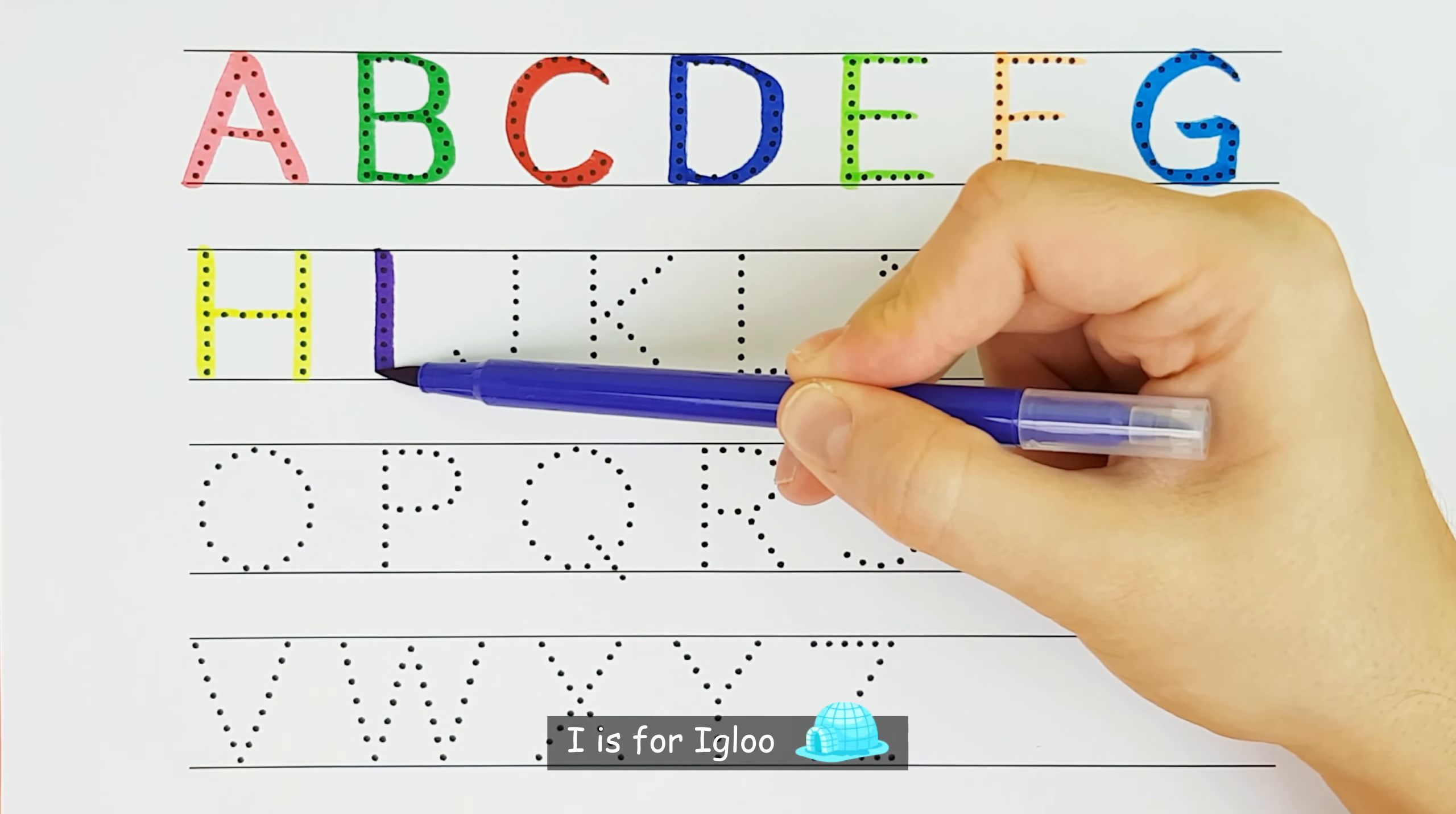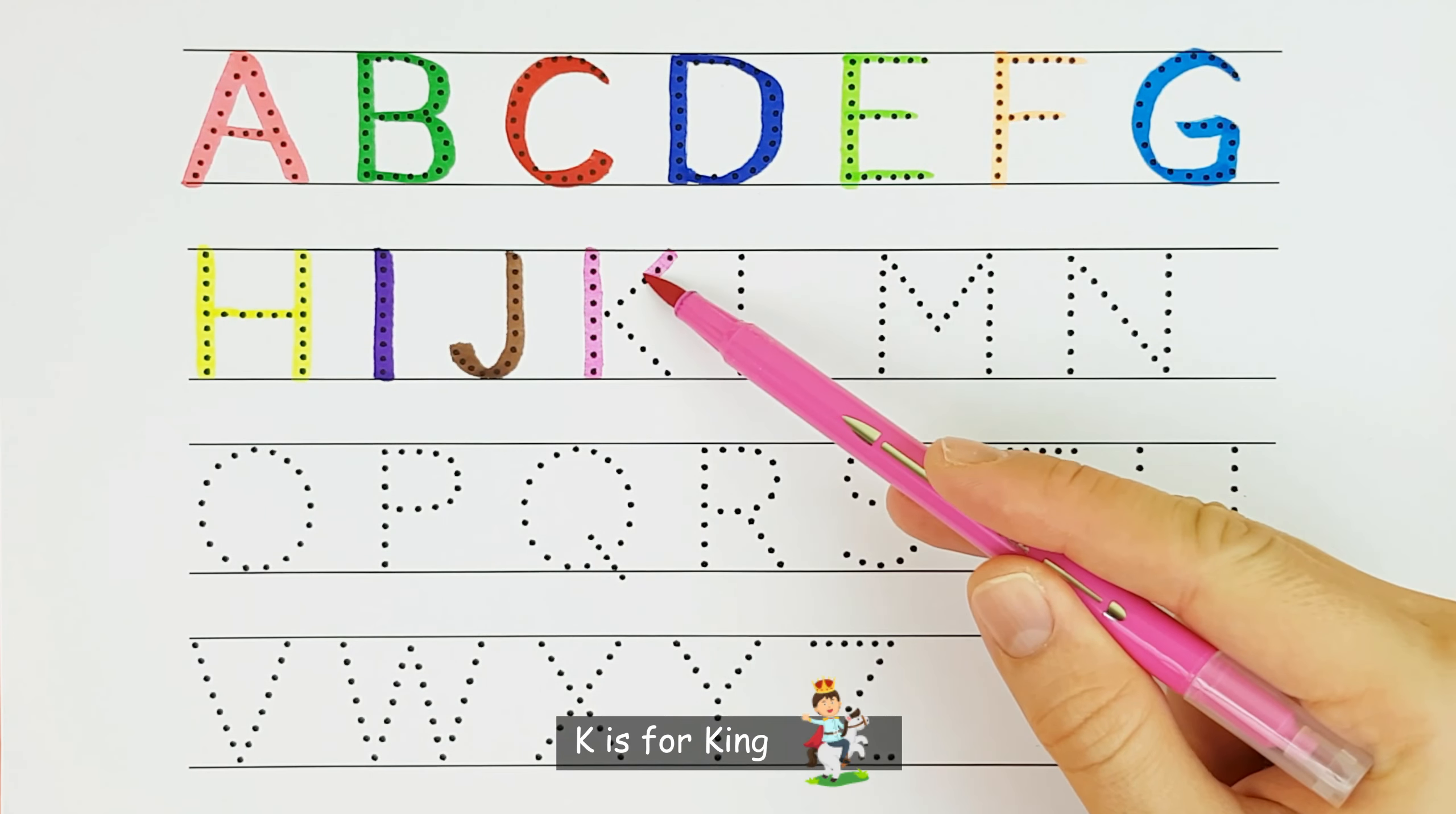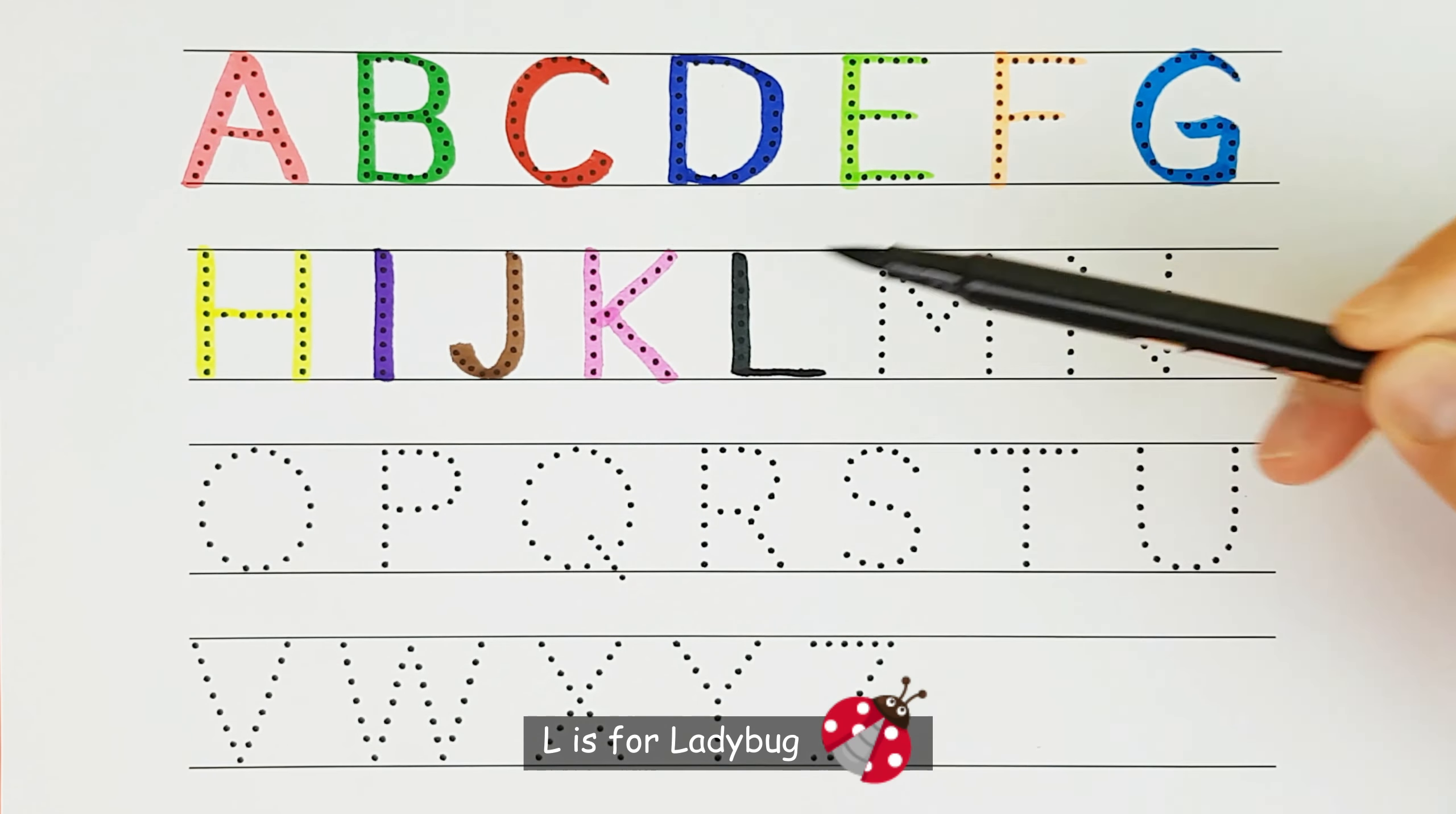I. I is for igloo. J. J is for jungle. K. K is for king. L. L is for ladybug.